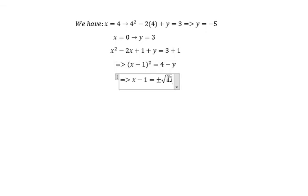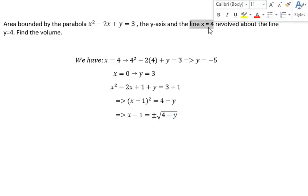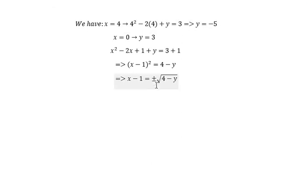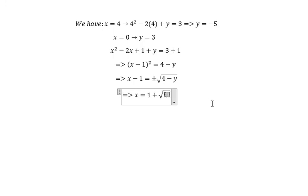We know that we have the line x equals 4. This means the boundary of this object is on the positive side, so we need to choose the positive in here. So we got x equals 1 plus the square root of 4 minus y.